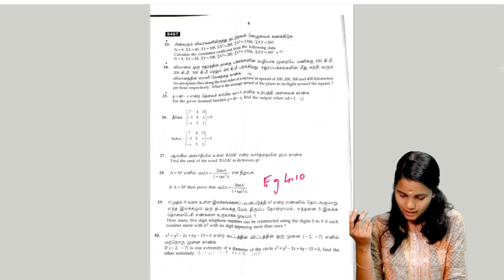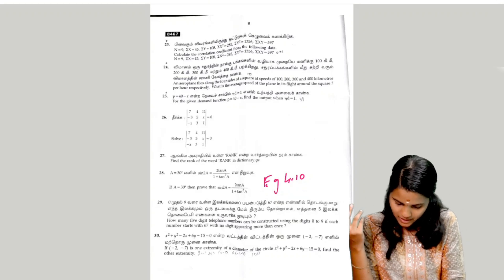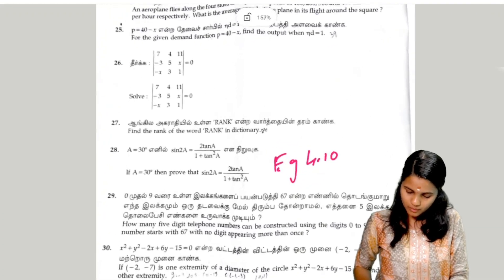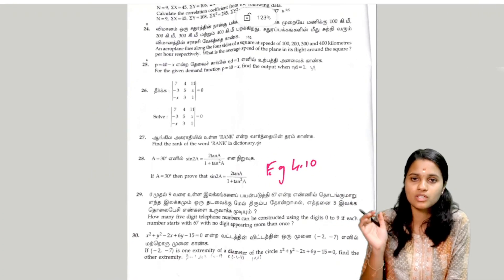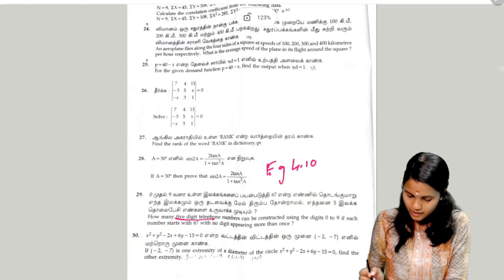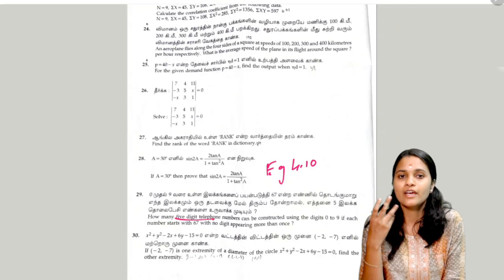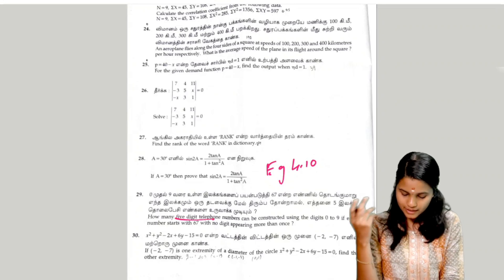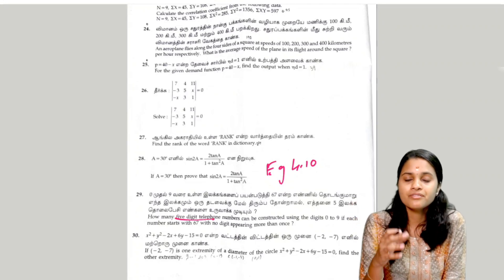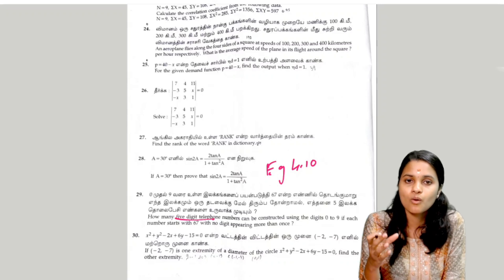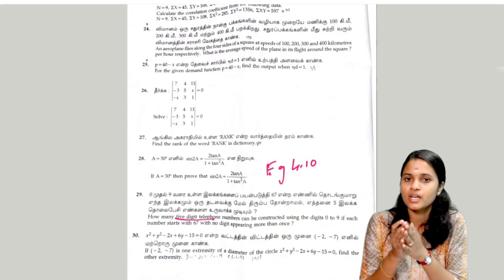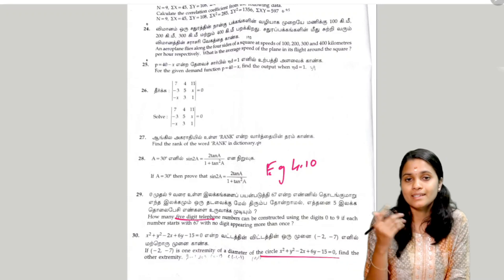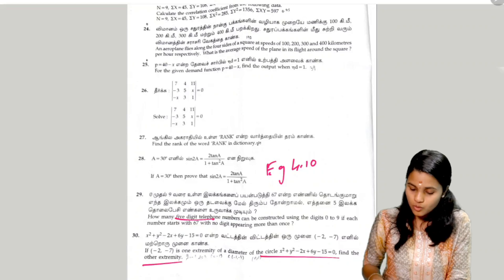The next question: how many 5-digit telephone numbers can be constructed? We will find it using the appropriate formula. The next question (question 30): if (−2, −7) is one extremity of the diameter of the circle, find the circle equation and the other extremity.